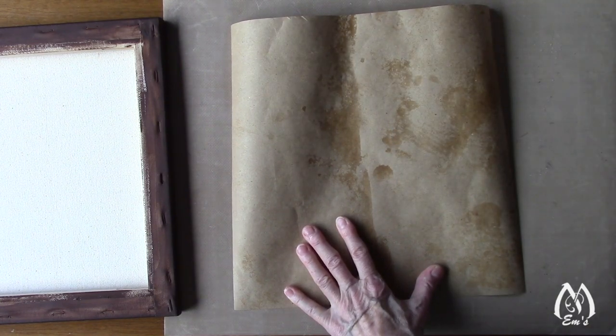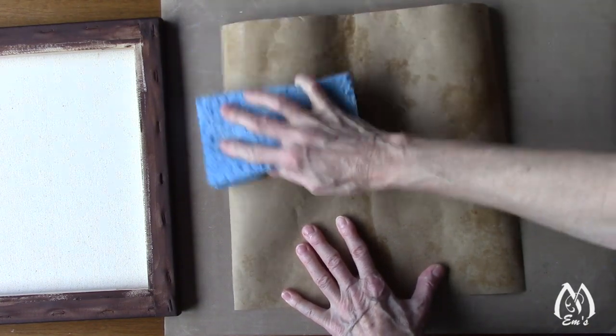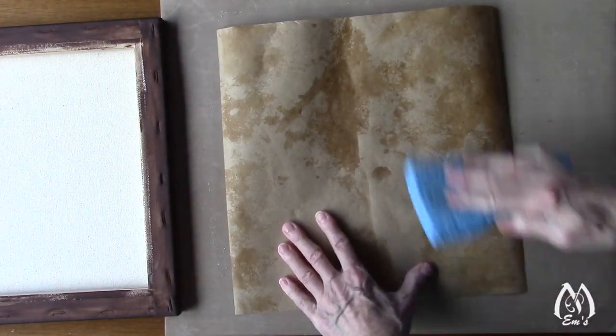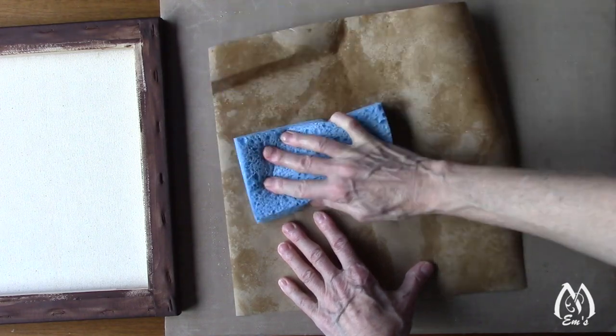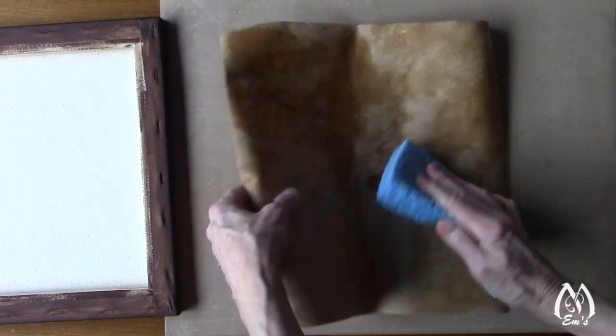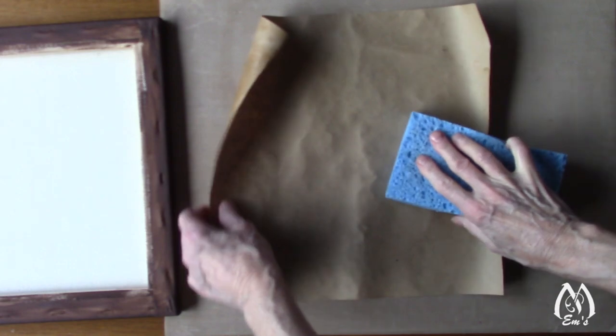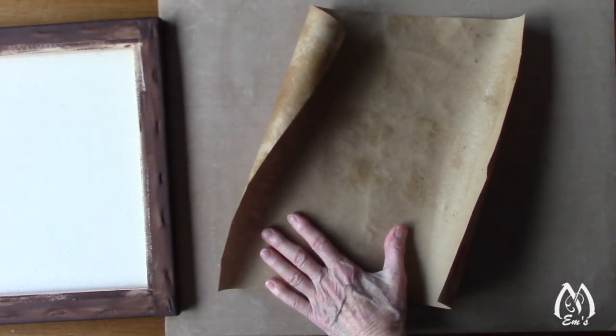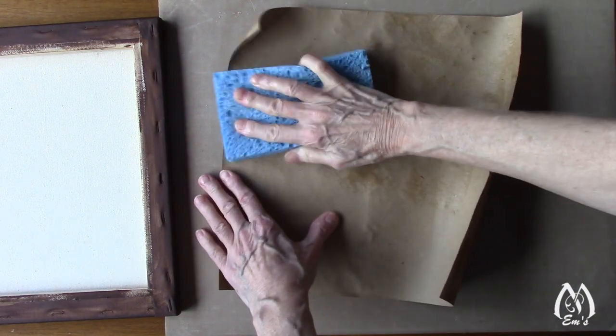You're getting the fibers to loosen up because that's the secret that helps to tighten the paper once you adhere it down. By loosening up the fibers, it will shrink and get taut.